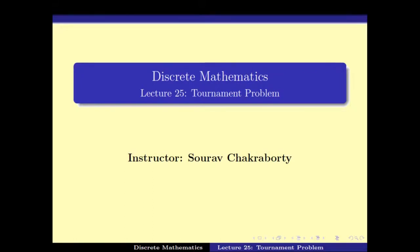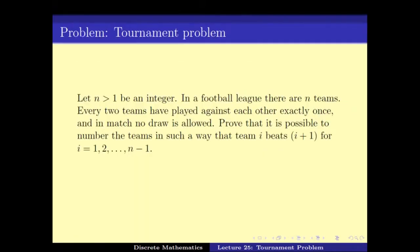Welcome back. We have been looking at the tournament problem. The problem states that in a football league there are n teams, every two teams have played against each other exactly once, and either of the teams has won — so there is no draw. Prove that it is possible to number the teams such that team i defeats team i+1: team 1 defeats team 2, team 2 defeats team 3, and so on.